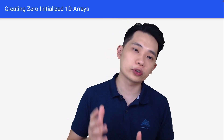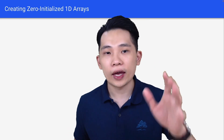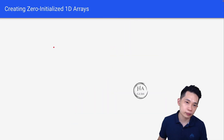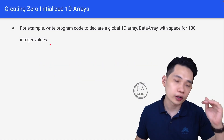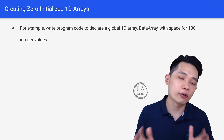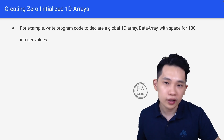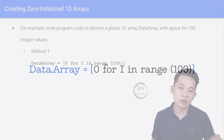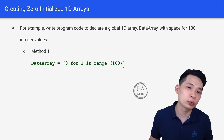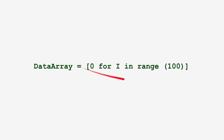Let's look at how we can create a zero-initialized 1D array. During your exam, sometimes the question may ask you to create an empty array first. For example, a question might ask you to declare a 1D array called 'data_array' with space for 100 integer values. We have two methods. Method 1: data_array = [0 for i in range(100)], which puts 0 for each value from 0 to 99, giving an array of 100 zeros.